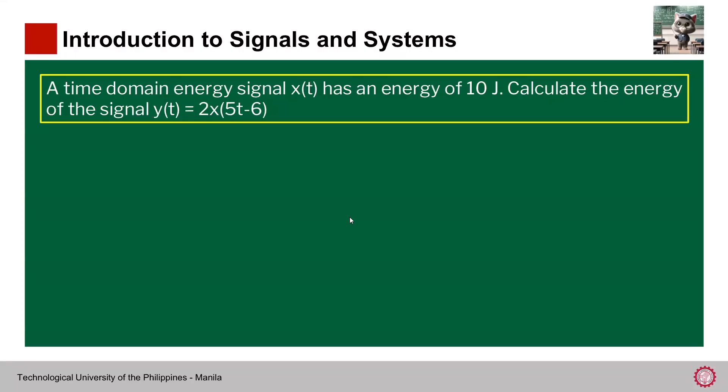Hi guys, so welcome to this special session for the mock test for the subject signal spectra and signal processing. Our first question is in the introduction to signals and systems. A time domain energy signal x(t) has an energy of 10 joules. Calculate the energy of the signal y(t) = 2x(5t - 6).